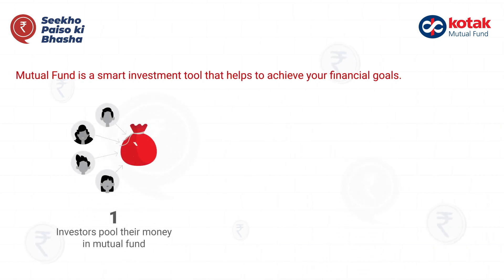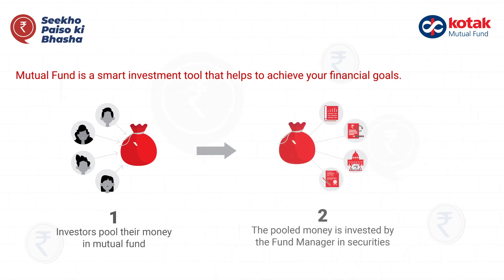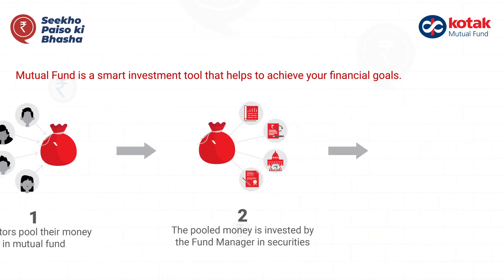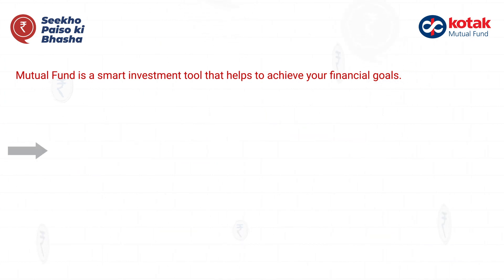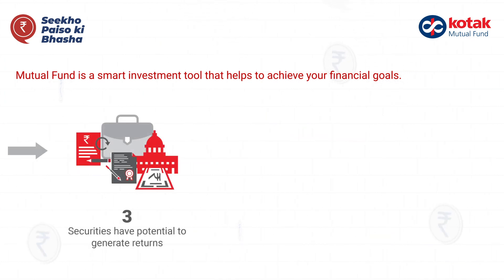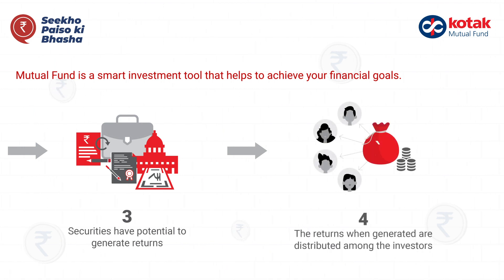1. Investors pool their money in Mutual Fund. 2. The pooled money is invested by the Fund Manager in Securities. 3. Securities have potential to generate returns. 4. The returns when generated are distributed among investors.